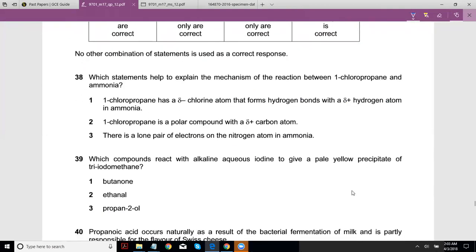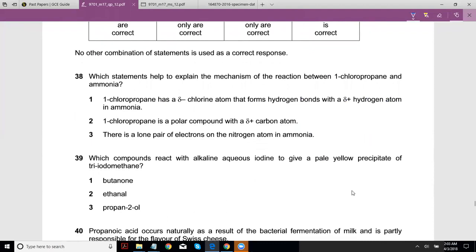Which statements help explain the mechanism of the reaction between 1-chloropropane and ammonia, where 1-chloropropane basically - if you add concentrated or alcoholic ammonia, this just substitutes into NH2. And it's an SN2 reaction because Cl is a leaving group and NH3 is a nucleophile. 1-chloropropane has a slightly negative chlorine atom that forms hydrogen bonds with a slightly positive hydrogen atom in ammonia.